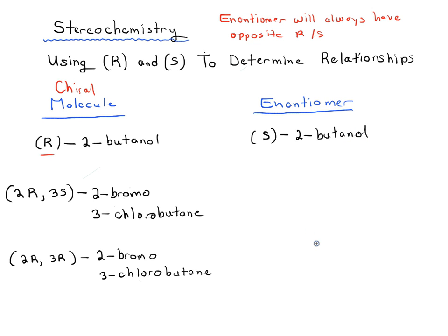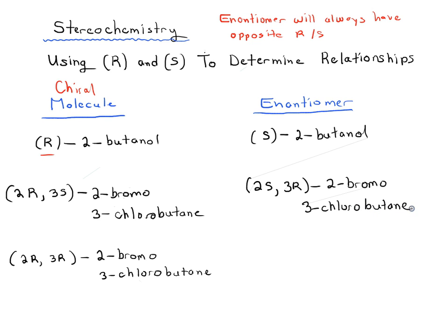If the chiral molecule is 2R3S-2-bromo-3-chlorobutane, we would switch 2R to 2S and 3S to 3R. That's the enantiomer — we're not even drawing anything out, just basing this on the name alone. And for 2R3R, the opposite of R is S, so the enantiomer is 2S3S-2-bromo-3-chlorobutane.